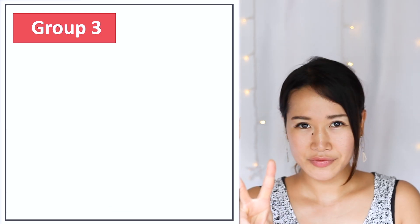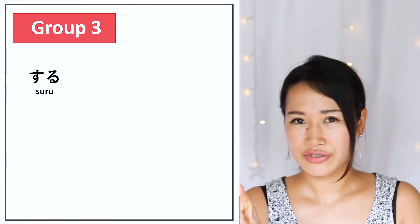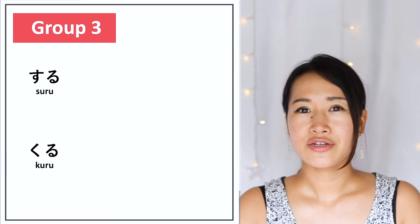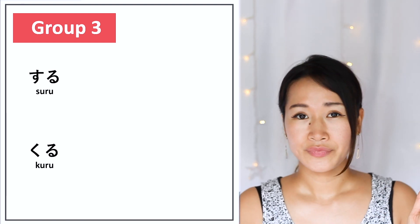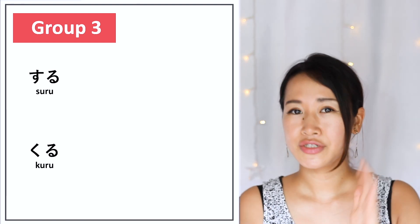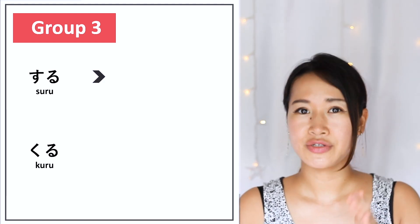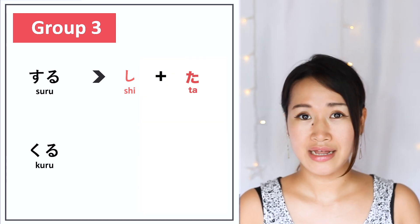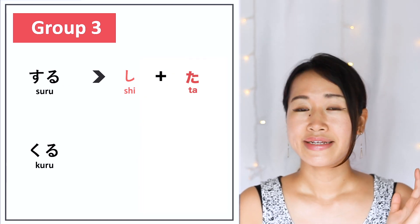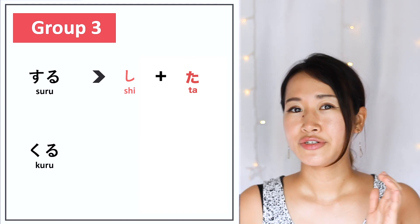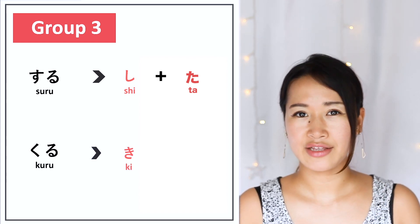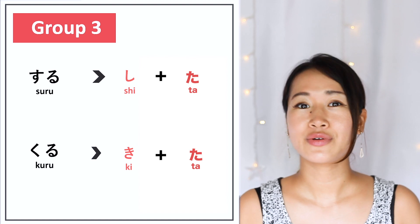Let's move into Group 3. There are only two verbs in Group 3: する (to do) and 来る (to come). Whenever you conjugate する to ta-form, する changes into し and you add た, so it becomes した. And くる changes into き and you add た, so it becomes きた.